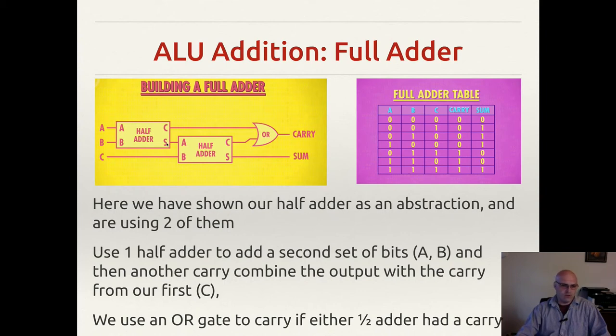So you can picture this as our half adder. This is just simply an abstraction of our half adder, our two inputs and our carry and sum outputs. Now the sum output of the first half adder goes into one of the inputs of the second half adder along with the carry from the last place.